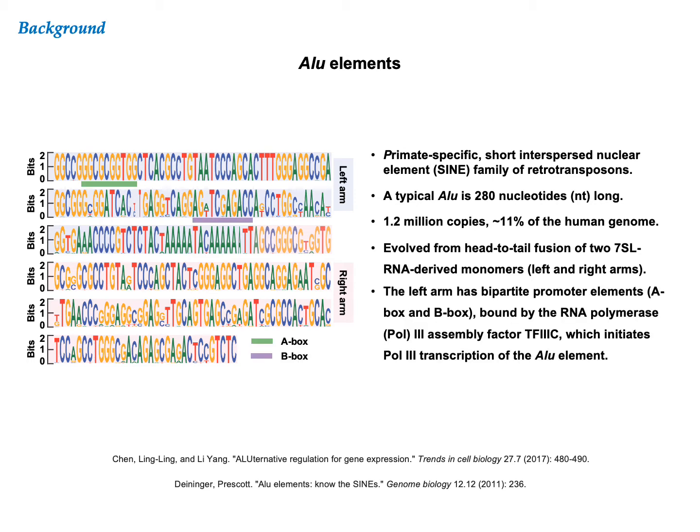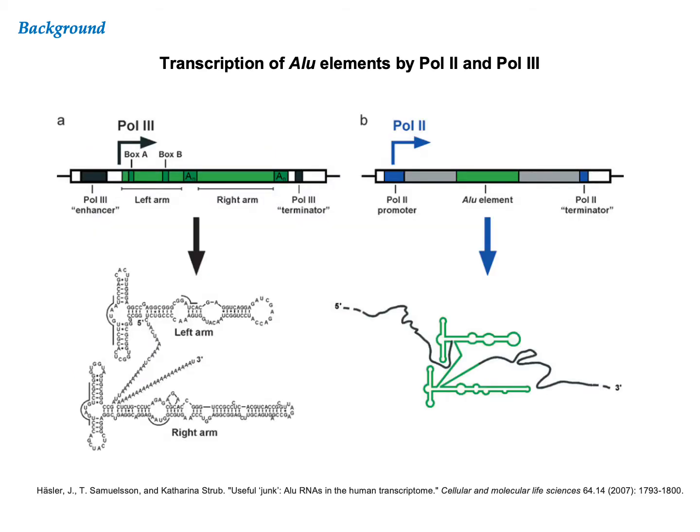The left arm has an A-box and a B-box, which are recognized by RNA polymerase III. Some Alus are transcribed by RNA polymerase III, while others are inserted into genes that are transcribed by RNA polymerase II. The focus of today's talk is Pol III transcribed Alu elements.